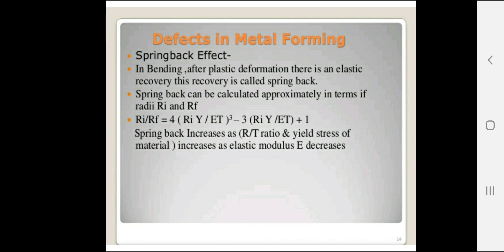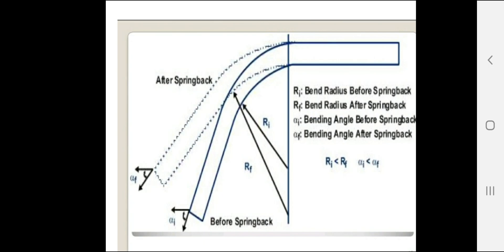A major defect is the spring back effect in bending. After plastic deformation there is an elastic recovery called spring back. Spring back can be calculated approximately using the ratio Ri/Rf, where Ri is the bend radius before spring back and Rf is the bend radius after spring back. Spring back increases with the R/t ratio and yield stress of the material, and decreases as elastic modulus increases.